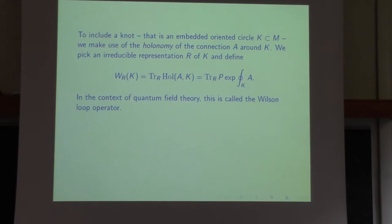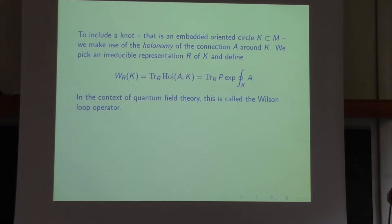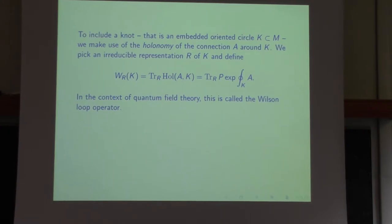In quantum field theory, this is called the Wilson loop operator. Wilson, of course, did not invent the holonomy, which is a 19th century concept. But he was the first to make serious use of it in quantum field theory. So the holonomy as an operator in quantum field theory is called the Wilson loop. I believe there's still an opportunity today to take a 19th century concept that hasn't been used in quantum field theory and get your name attached to it.